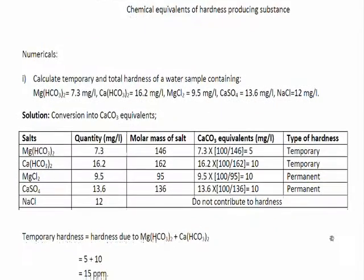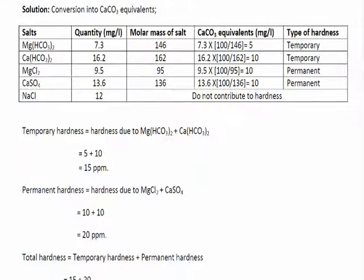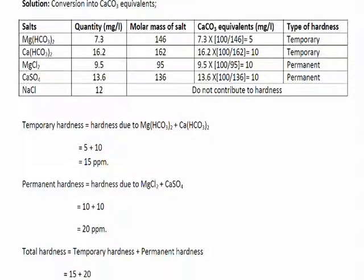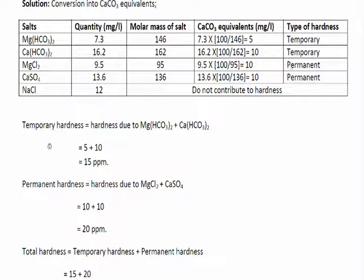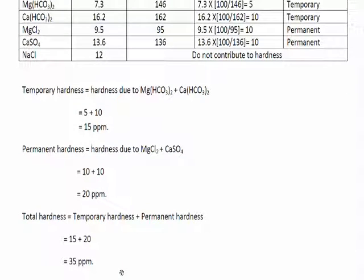The sum of the CaCO3 equivalence of temporary hardness producing salts will give you temporary hardness, and similarly you can calculate permanent hardness — that is again the sum of permanent hardness producing salts. The sum of temporary and permanent hardness will give you total hardness.